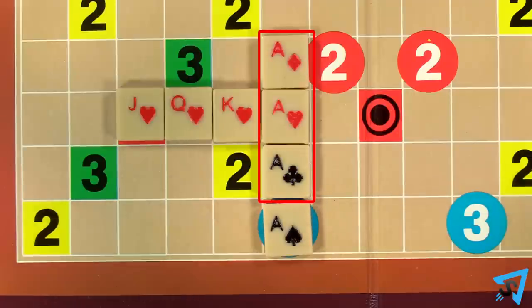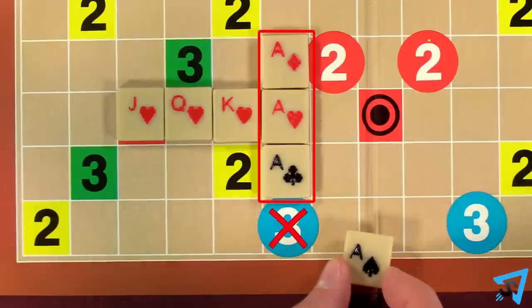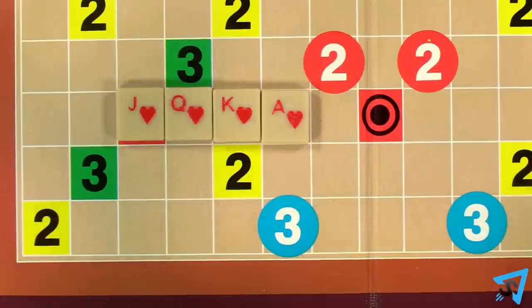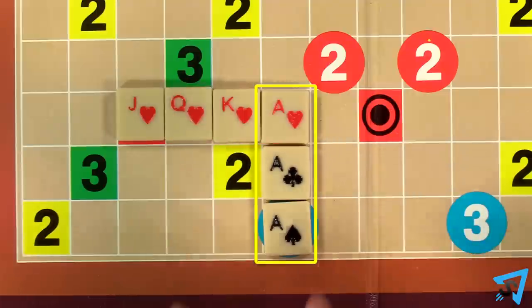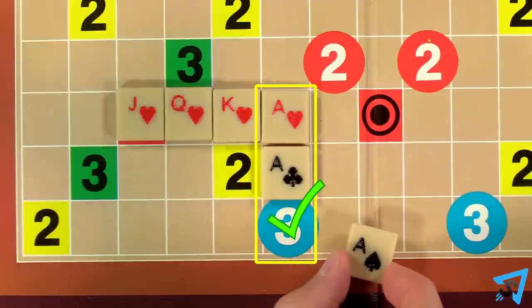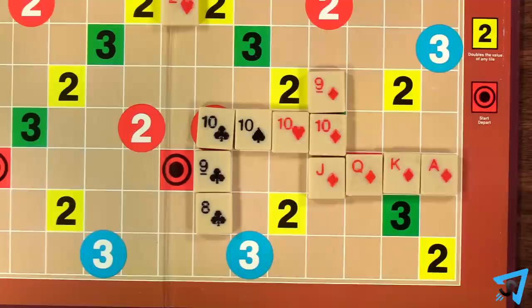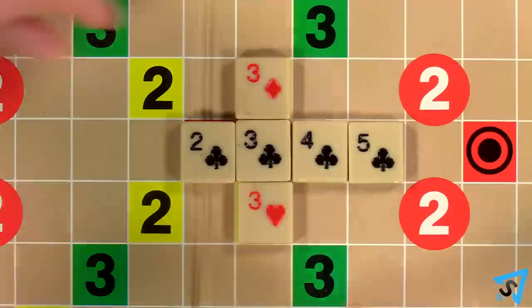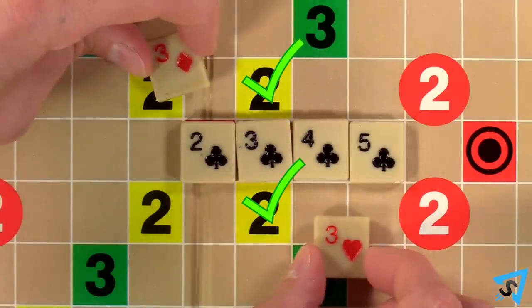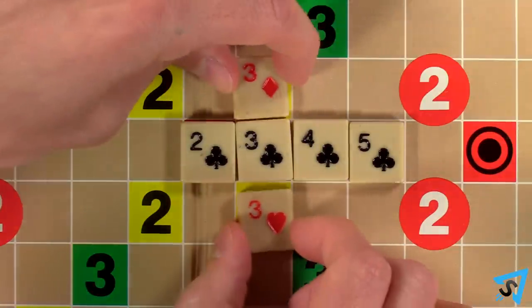Adding tiles to an existing meld or run does not grant a red or blue bonus. Instead, you must create a new meld or run to get that bonus. You may only score bonuses on the turn you cover the bonus square, and not later when you add to one previously covered. If multiple bonuses are covered in the same turn, then they are both counted or multiplied.